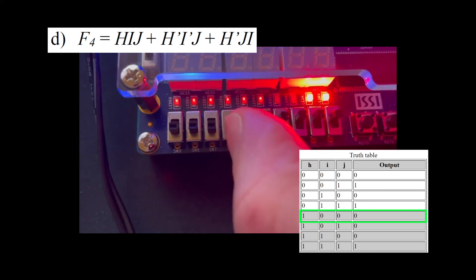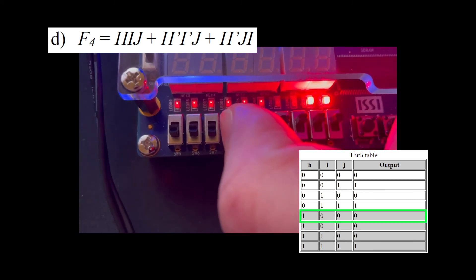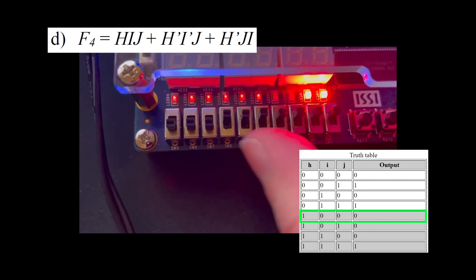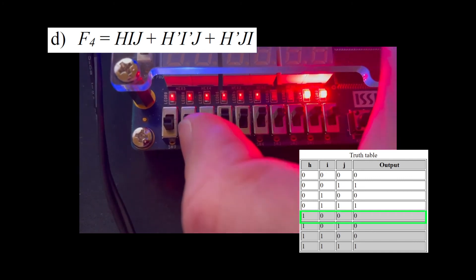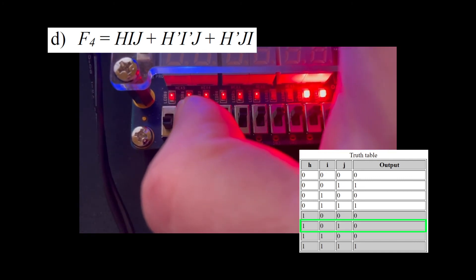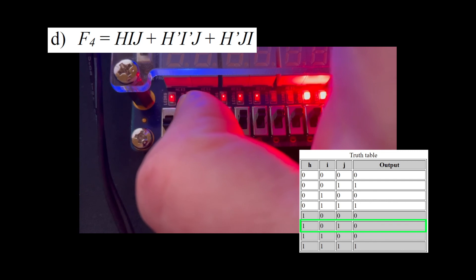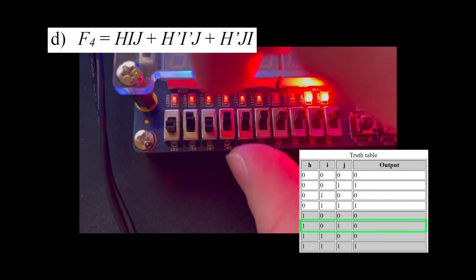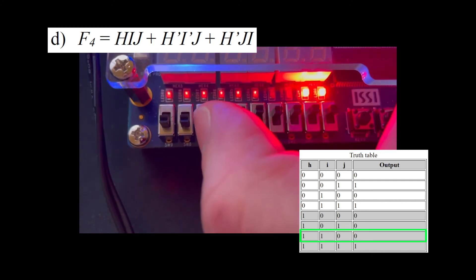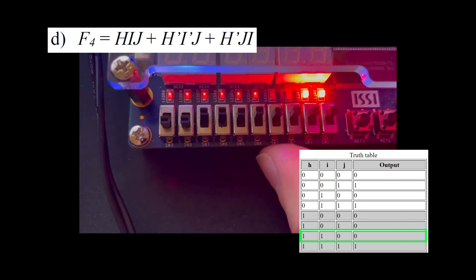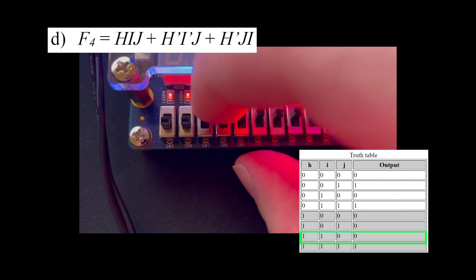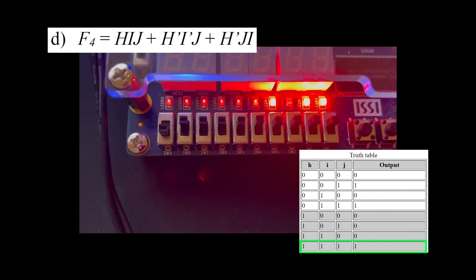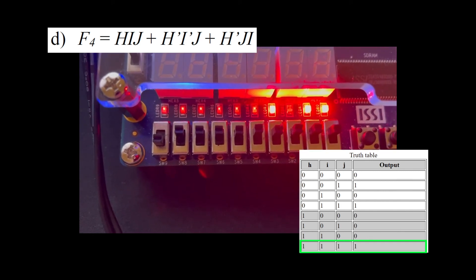For the second half, H equals 1. When I is 0 and J is 0, F4 is 0. When I is 0 and J is 1, F4 is 0. When I is 1 and J is 0, F4 is 0. When I is 1 and J is 1, F4 is 1.